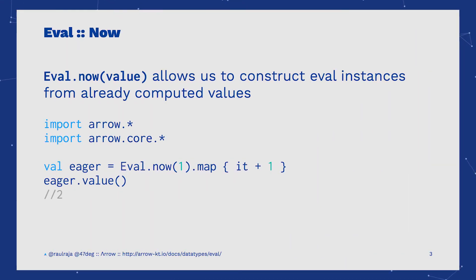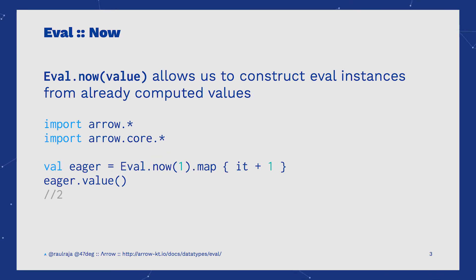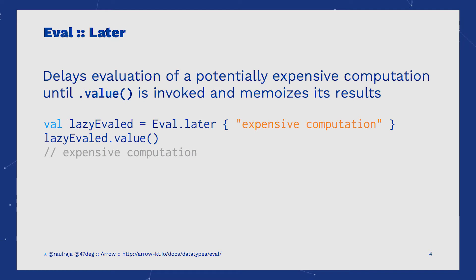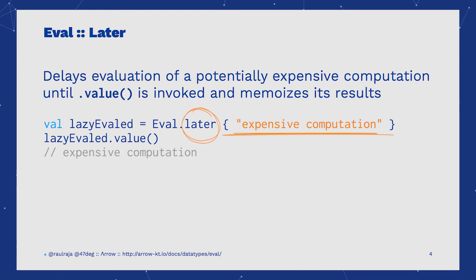We can construct Eval instances from already computed values by using the `now` constructor. If we want to defer the computation of a potentially expensive expression, we use the constructor `later`.